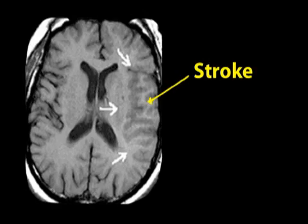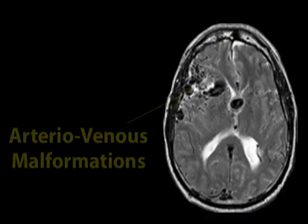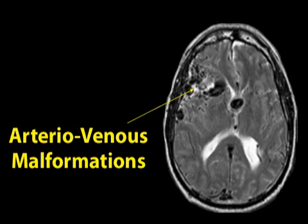This MRI shows a region of stroke, which results from a sudden blockage of blood flow to the brain. Seizures don't cause strokes, but strokes can lead to seizures when brain cells are injured and can no longer control their electrical activity. One stroke can cause ongoing seizures for years. Abnormal blood vessels in the brain, such as aneurysms, arteriovenous malformations, or cavernous angiomas, can all cause seizures.